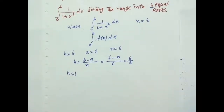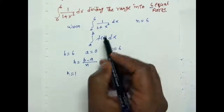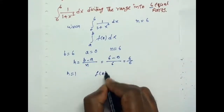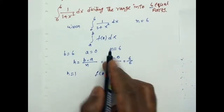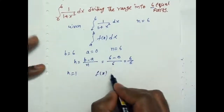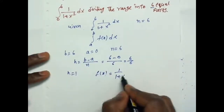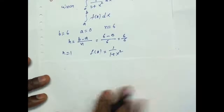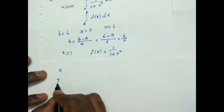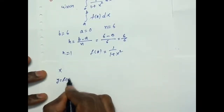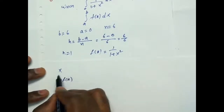Now we have to draw the table. What is f of x? f of x is equal to 1 by 1 plus x square. y is nothing but y equal to f of x — y or f of x, both are same.